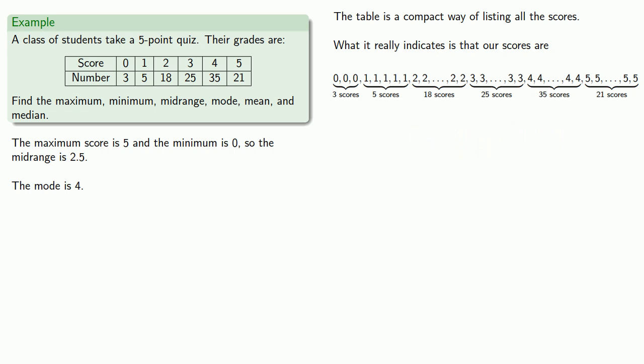Now remember, the median is going to be the middle score when all of the scores are put in order. All of our scores have been put in order, we just have to figure out where the middle is. We can compute how many scores we actually have: three plus five plus eighteen plus twenty-five plus thirty-five plus twenty-one. That's a hundred and seven scores all together.